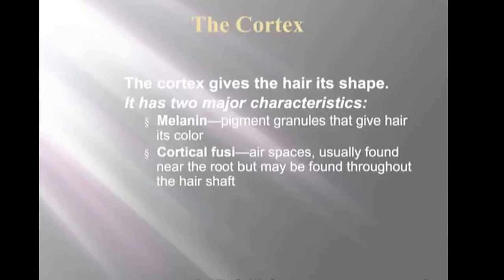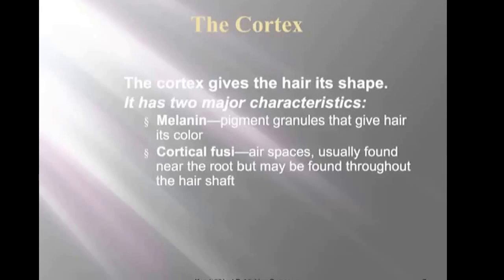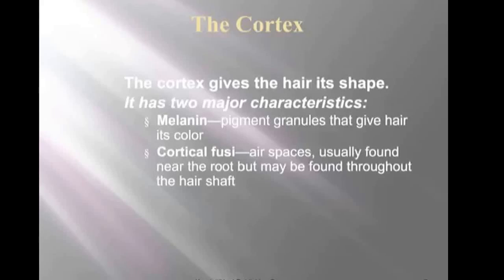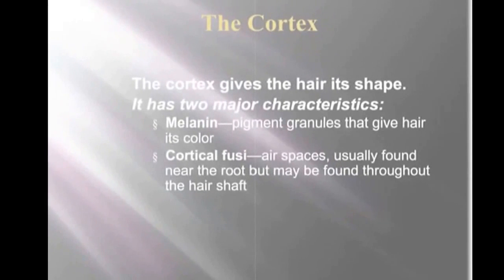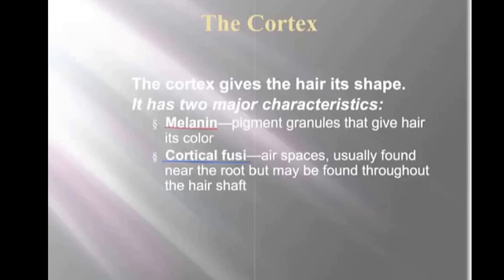The cortex is kind of the meat of the hair itself, made up of two major characteristics: melanin and cortical fusi. The melanin are pigment granules — you'll see these scattered throughout, sometimes very densely, sometimes not present much at all. The cortical fusi, again, are those air spaces. As the hair grows out, those air spaces tend to dissipate — they're more prevalent near the root than near the end of the hair shaft.